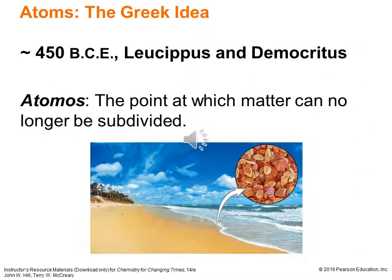Even earlier, around 450 BCE, we have Leucippus and Democritus — Leucippus the teacher, Democritus the student — and the student actually became more famous for the theory of atomos, the point at which matter can no longer be subdivided. Unfortunately, Aristotle, being the giant in philosophy that he was, changed everyone's mind on this. People went the Aristotelian route, which was wrong, instead of following Leucippus and Democritus with an atomistic view.